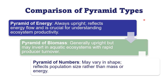Comparing the pyramid types overall: the pyramid of energy is always upright. The pyramid of biomass is upright in terrestrial ecosystems but inverted in the aquatic ecosystem. The pyramid of numbers can vary — it can be upright, inverted, or spindle-shaped — depending upon population size and ecosystem type.